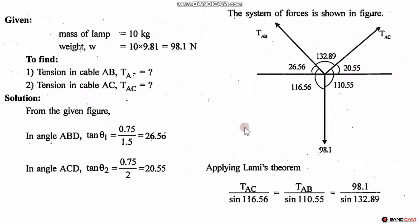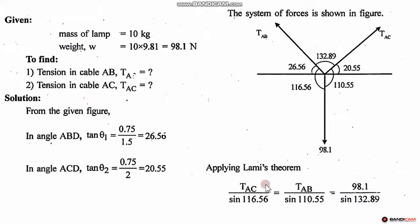Now we have the 3 angles. The total angles add up correctly — 20.55°, and each is a component of 90°. Using Lami's theorem, TAC divided by sin 116.56° equals TAB divided by sin 110.5° equals 98.1 divided by sin 132.8°. From the first and last ratio we get TAC, and from the second and last ratio we get TAB.